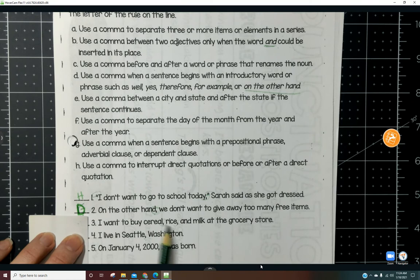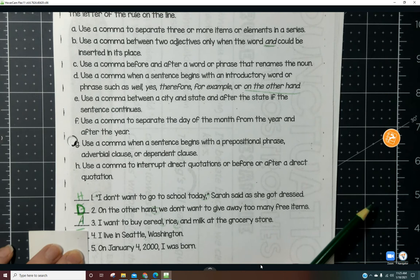'I want to buy cereal, rice, and milk.' We made a list. So that would be A.